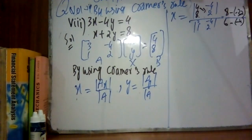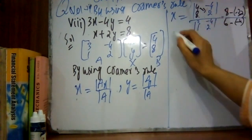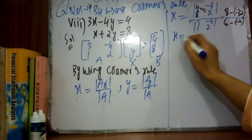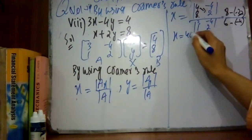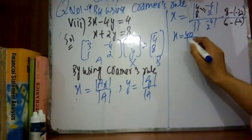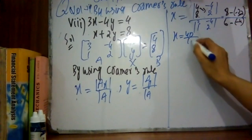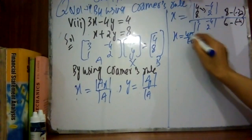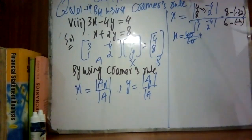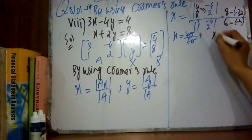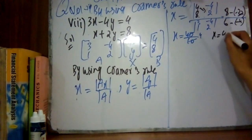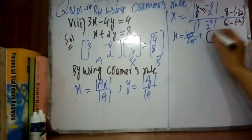So 8 plus 32 gives 40 in the numerator. For the denominator: 3 times 2 equals 6, minus 1 times minus 4 gives minus minus plus, so 6 plus 4 equals 10. Therefore x equals 40 divided by 10, so x equals 4.